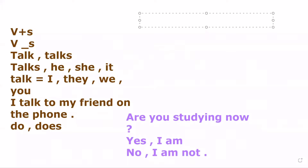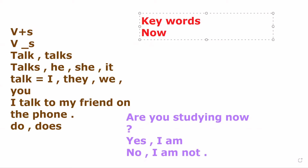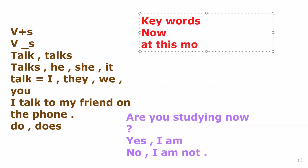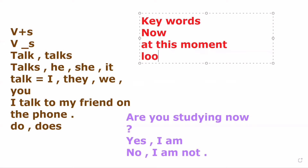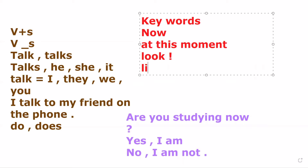What are the keywords of the present continuous? Keywords: now, yes, at the moment, at this moment. Also: look, listen, now, at the moment, or this moment.